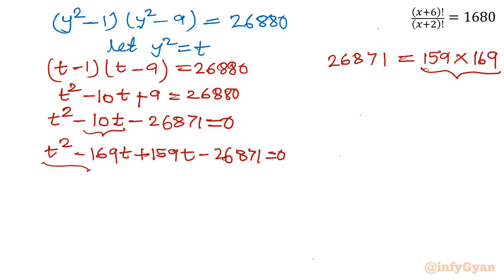Now from first two terms I will take t: t(t-169). From last two terms I will take 159 correspondence. So of course in bracket we will have same 169 because we know this. Now I will take t-169 completely outside so our factorization is done: (t-169)(t+159) equal to 0.